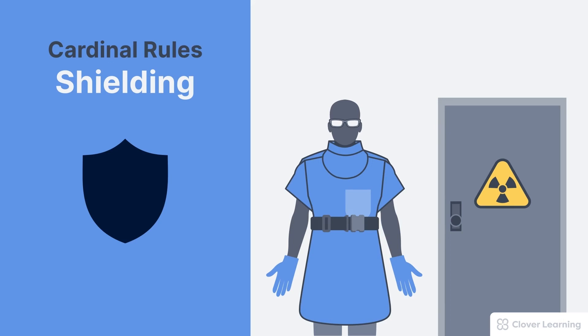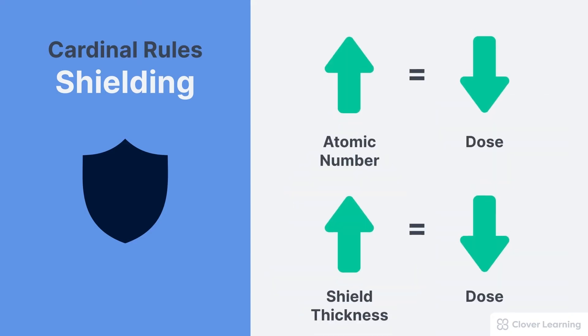The amount of radiation dose reduction depends on the shielding material and the thickness of the shield. Lead is more effective than other materials because it's very dense and has a very high atomic number. More lead results in more attenuation and a lower radiation dose.